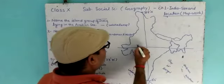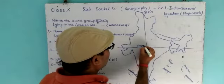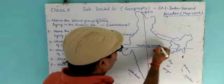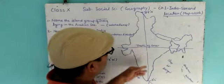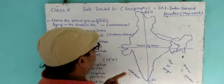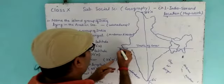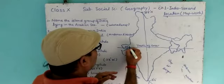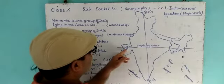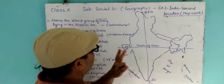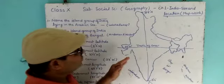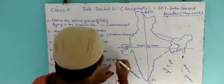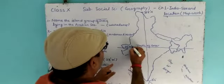It is the Tropic of Cancer. It divides India into two equal parts and it is at 23 degrees 30 minutes north.